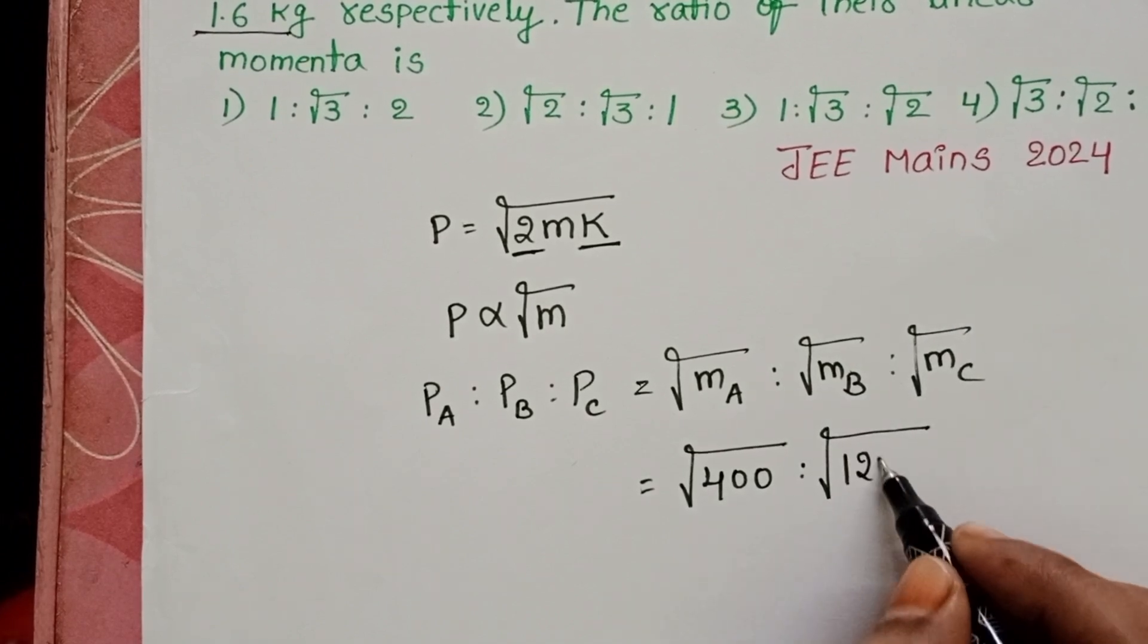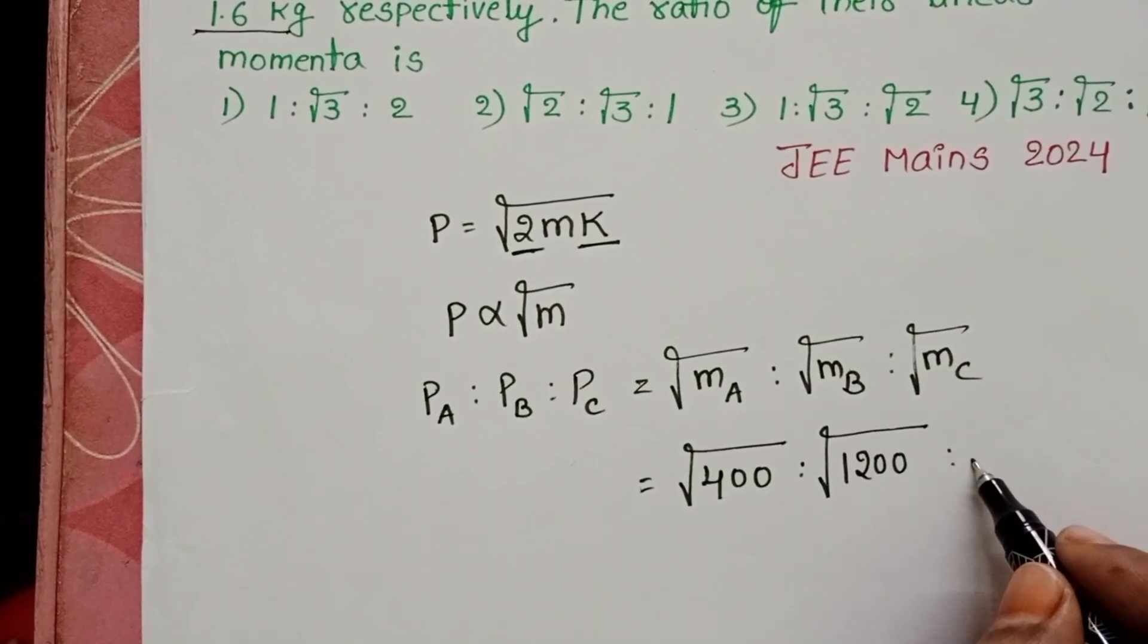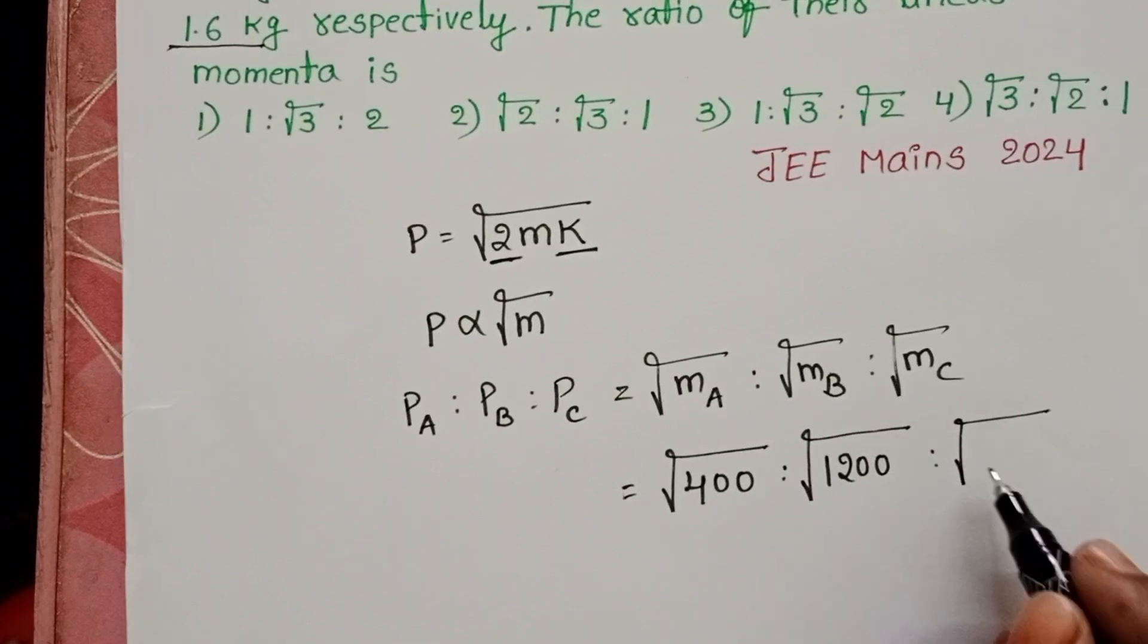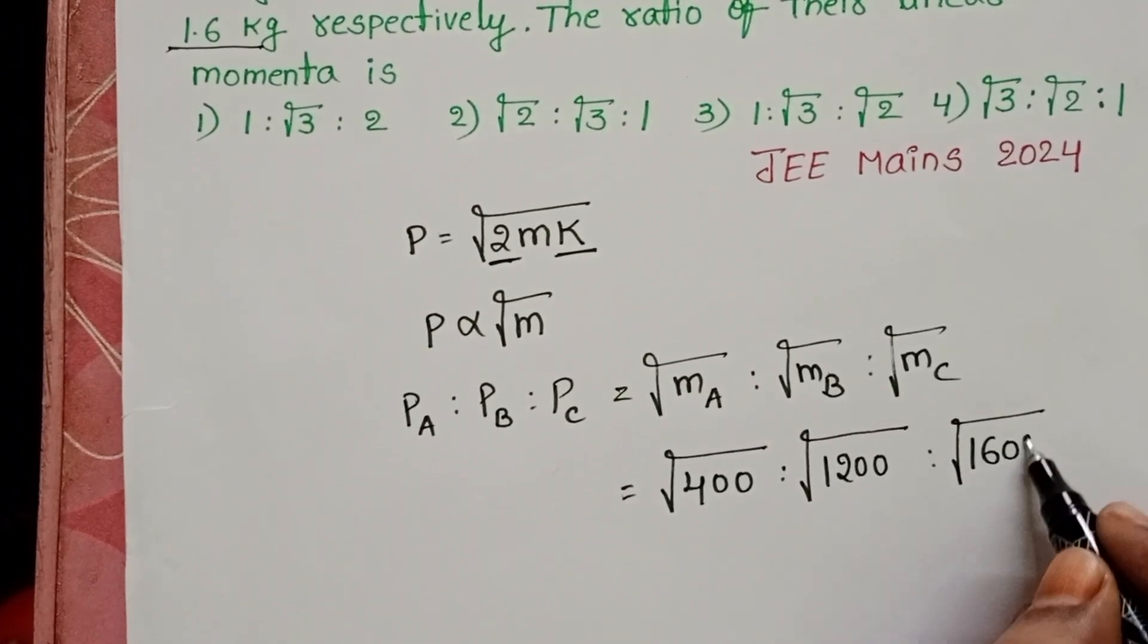1.2 kg equals 1200 grams. Mass of the third body, 1.6 kg, becomes 1600 grams.